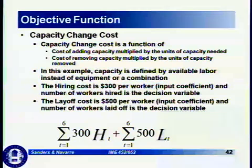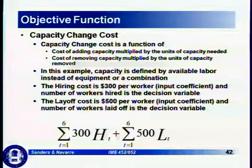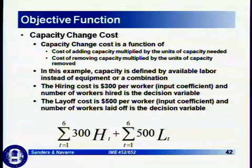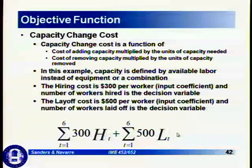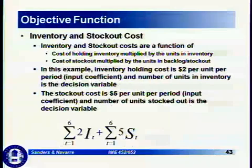Capacity change cost is a function of adding capacity multiplied by units of capacity needed, and removing capacity multiplied by units removed. In this example, capacity is defined as available labor. Hiring cost is $300 per worker — that's an input coefficient — and the number of workers hired is the decision variable. Layoff cost is $500 per worker, and the number of workers laid off is the decision variable. So those pieces of the objective function are $300 times workers hired plus $500 times workers laid off.